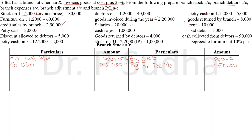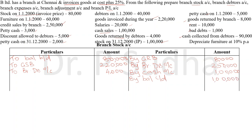For goods returned by debtors: when customers return goods the value increases, so we record it on the debit side as debtors account, 4,000. Cash collected from debtors and petty cash will not affect stock account. Closing balance of stock is given, so we write it on the credit side as balance carried down. Now tally the account.